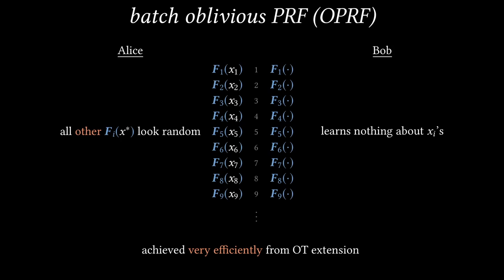For example, it only takes a few seconds to execute a batch of one million OPRFs. You can also think of Batch OPRF as another name for 1 out of n OT, since in each slot the sender has many random values, the outputs of F, and the receiver learns only one value of her choice.